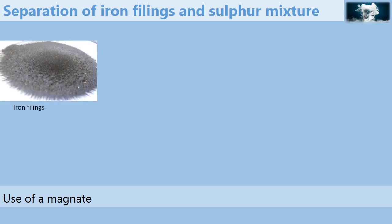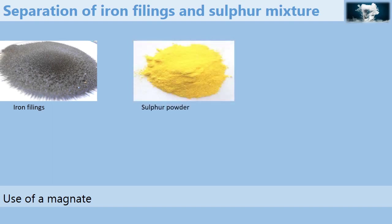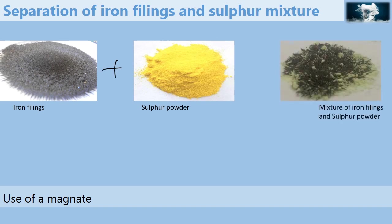Iron filings, which is grey in colour, is mixed with sulphur powder, which is yellow, to give a mixture of iron filings and sulphur, which we say is grey-yellow in colour. We have just taken the colour of iron filings and sulphur powder. But since they are together, we say grey-yellow.